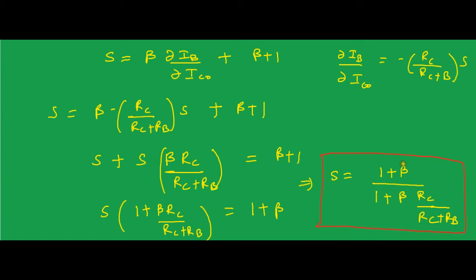As you can see, for fixed bias the stability factor was (1 plus beta), which is a very large value. It means for a small change in ICO there was a very large change in the collector current, which is not a good design — the operating point will fluctuate and may go to cutoff or saturation region. So fixed bias is not a proper way of biasing the circuit. However, collector to base bias improves the stability factor — the stability factor is much less than (beta plus 1), meaning the operating point is now stable.